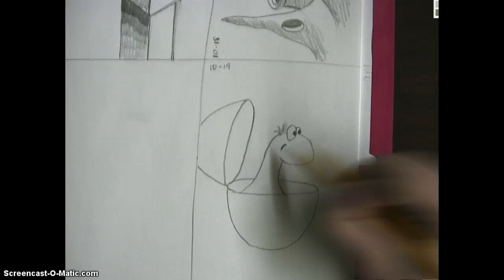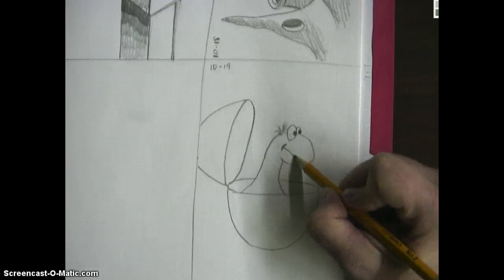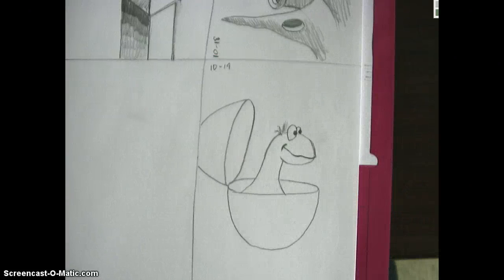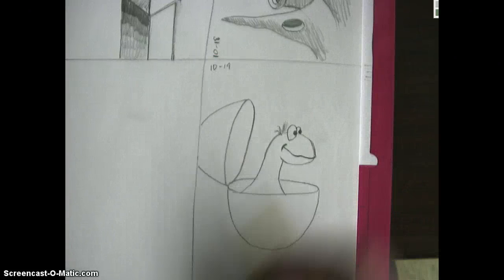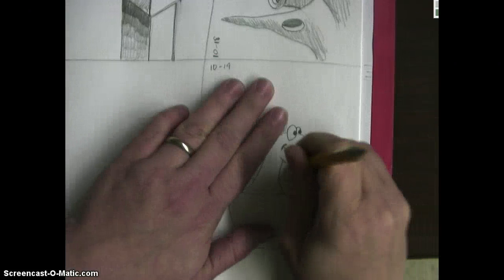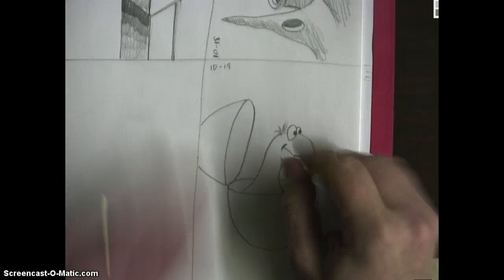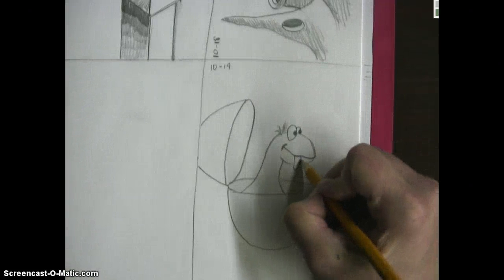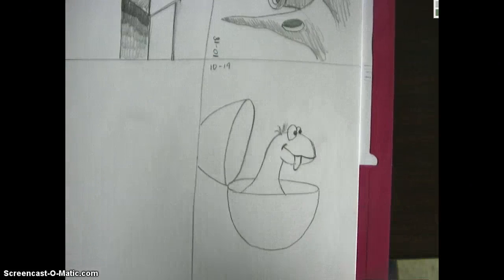Let's give him a little smile and create his mouth like this. Have a little tongue sticking out here. He's a baby, he doesn't know any better. Erase what you don't need. Get rid of those lines. Those lines are in your way.